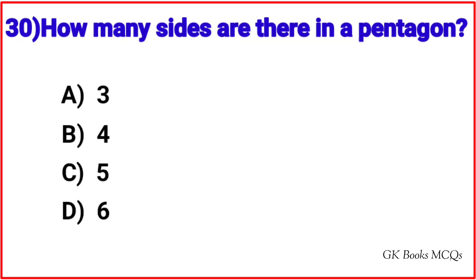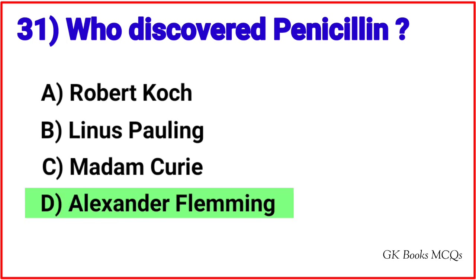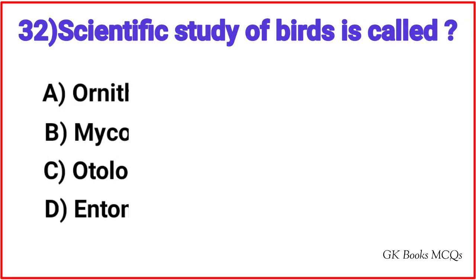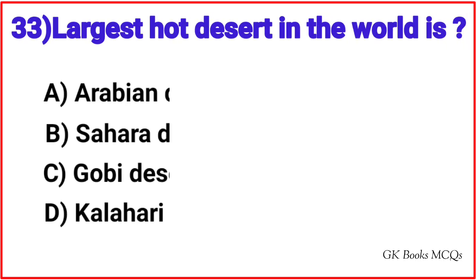Question 30: How many sides are there in a pentagon? Correct answer is option C, 5. Question 31: Who discovered penicillin? Correct answer is option D, Alexander Fleming. Question 32: Scientific study of birds is called? Correct answer is option A, Ornithology.